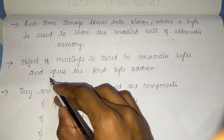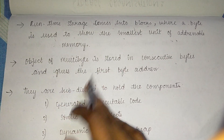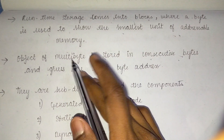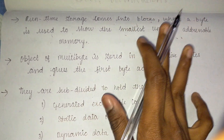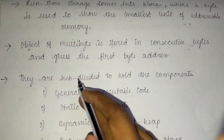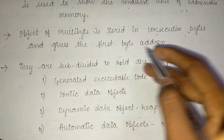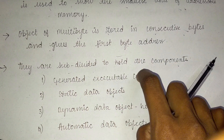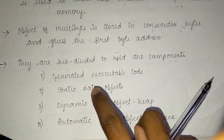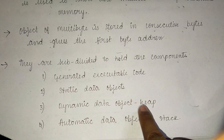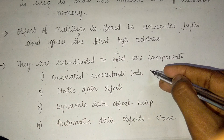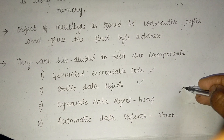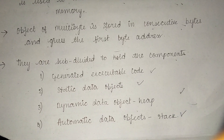An object of multibyte is stored in consecutive bytes and gives the first byte address. These are subdivided to hold the components: generated executable code, static data objects, dynamic data object heap, and automatic data object stack.